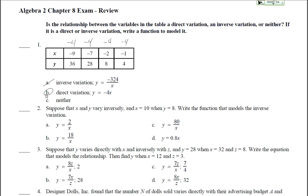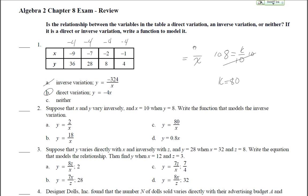Number 1 is letter B. Number 2 says: suppose that x and y vary inversely, so y equals k over x. When x is 10, y is 8, so 8 equals k over 10. We need to find k, so multiply both sides by 10 — that gives k equals 80. We replace k with 80, and our function is y equals 80 over x. Number 2 is C.